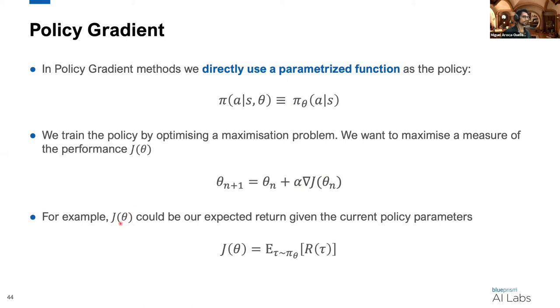For example, this measure of performance could be our expected return given the current policy parameters. We have an expectation over the traces given our current policy, and an expectation over the return of these traces. We want to maximize this. We want to do as well as possible given the stochasticity of the environment. This is nice because we're actually directly optimizing the policy, which is quite intuitively appealing.